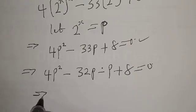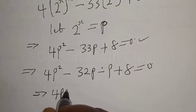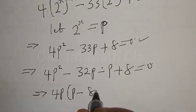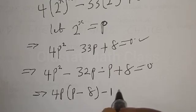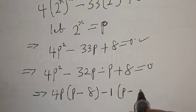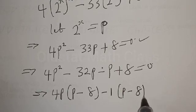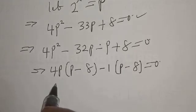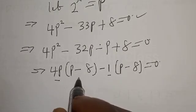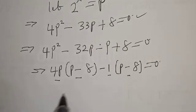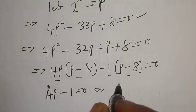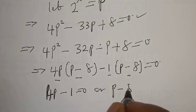This implies that we have 4p into p minus 8 minus 1 into p minus 8 equal to zero. Therefore we have 4p minus 1 as one factor and p minus 8 as the other factor, giving us 4p minus 1 equal to zero or p minus 8 equal to zero.